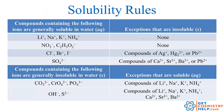There are solubility rules that summarize the solubility of different ionic compounds based on what ions they contain. You can print out a PDF at GetChemistryHelp.com that has all of these solubility rules summarized. Generally, compounds that contain the following ions are soluble in water — that means aqueous: lithium, sodium, potassium, ammonium, nitrate, acetate, chloride, bromide, iodide, and sulfate are generally always going to be soluble.